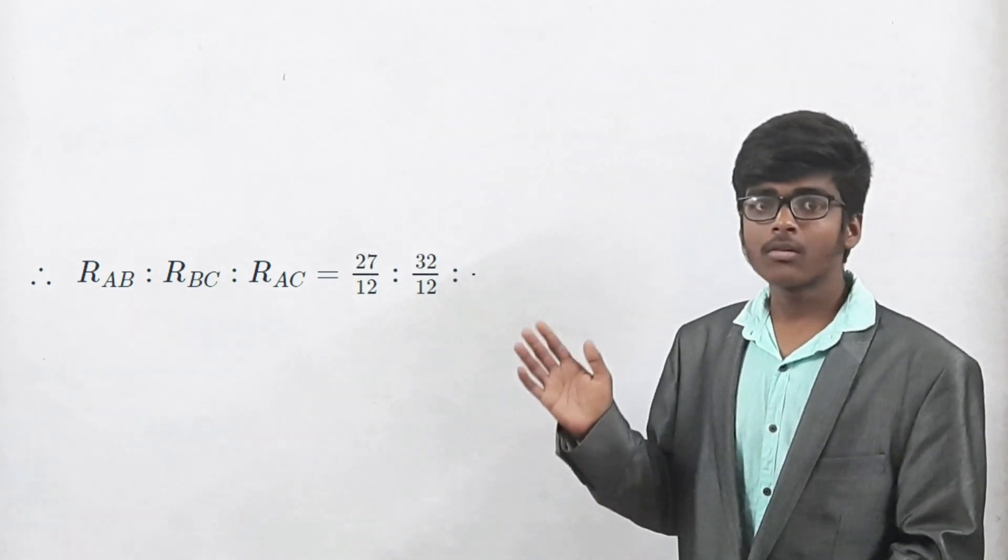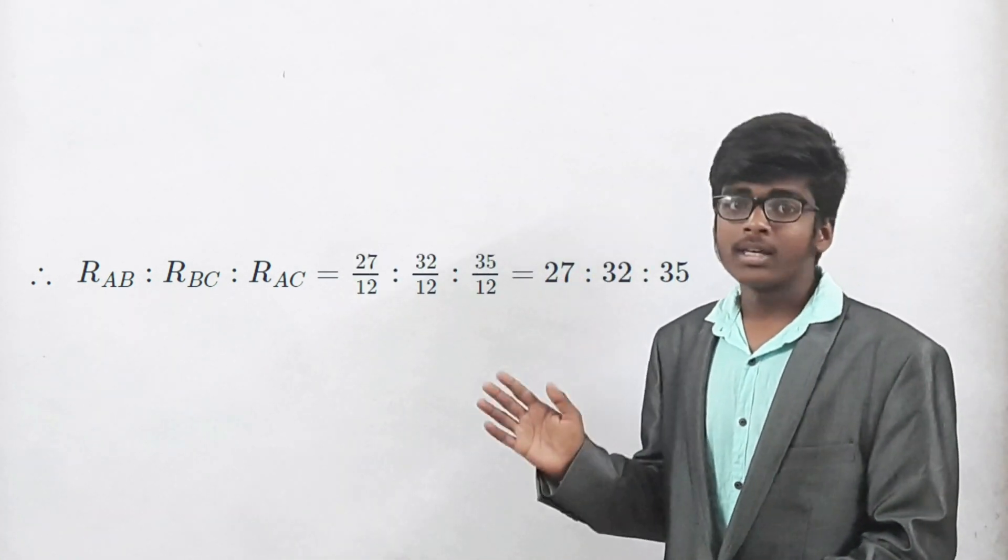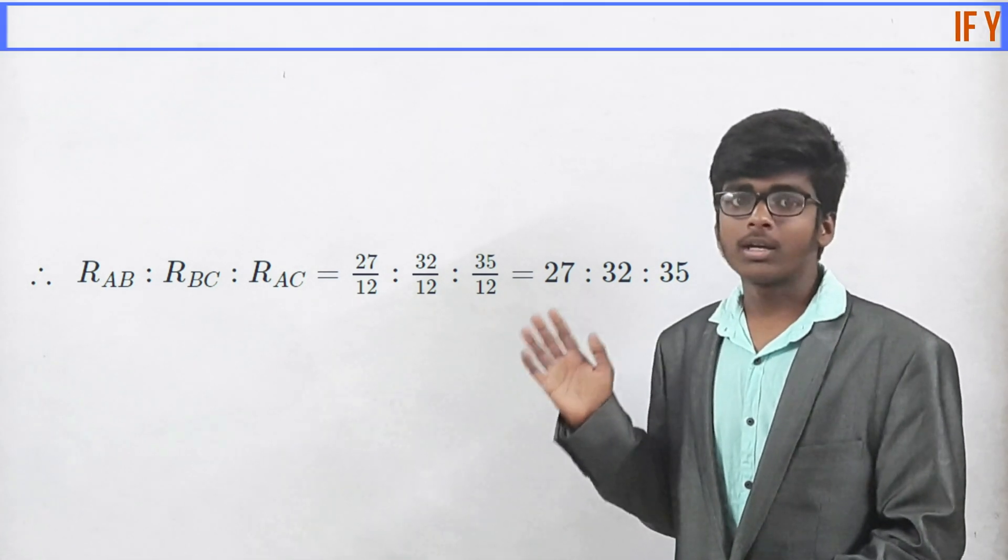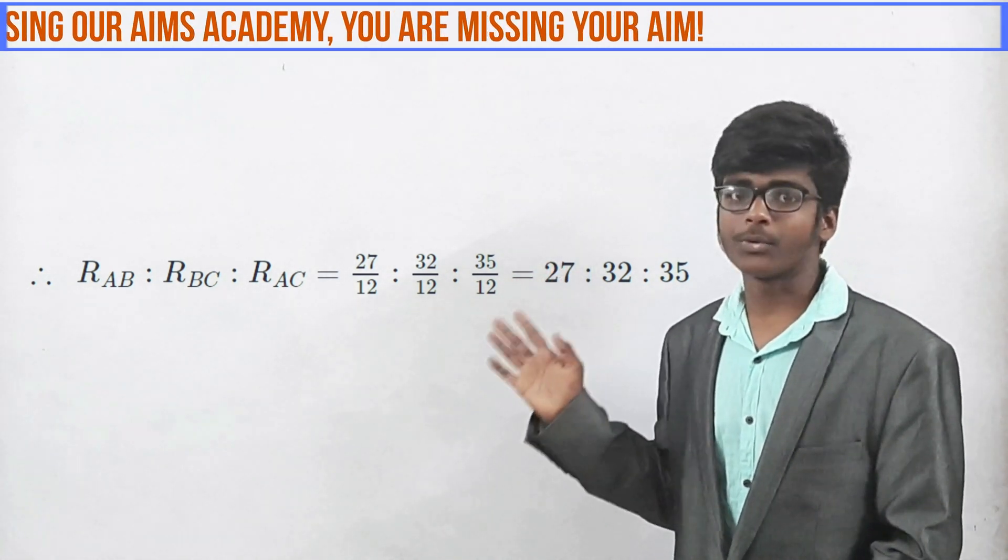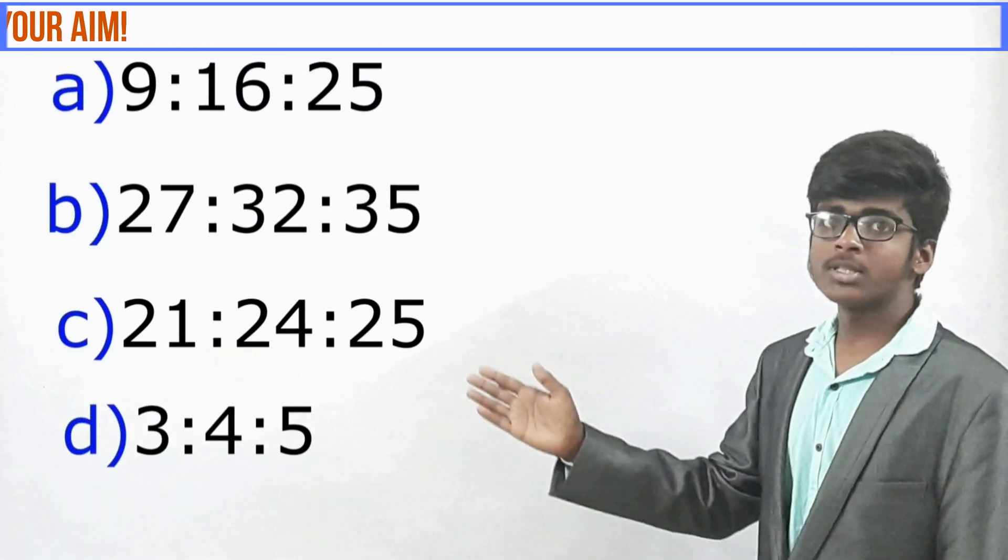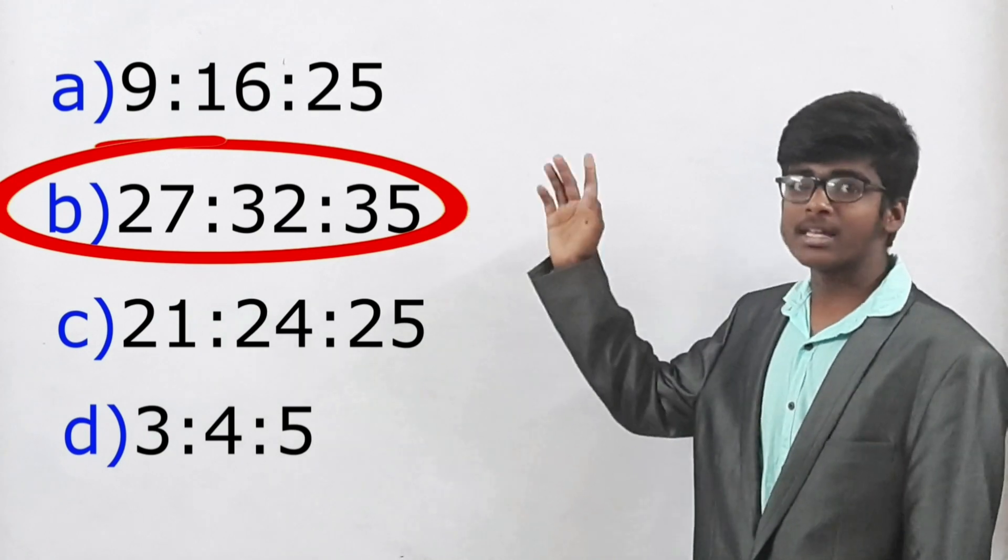Therefore, the answer for the question is RAB is to RBC is to RAC is equal to 27 by 12 is to 32 by 12 is to 35 by 12, that implies 27 is to 32 is to 35. The answer lies in option B which has been encircled.